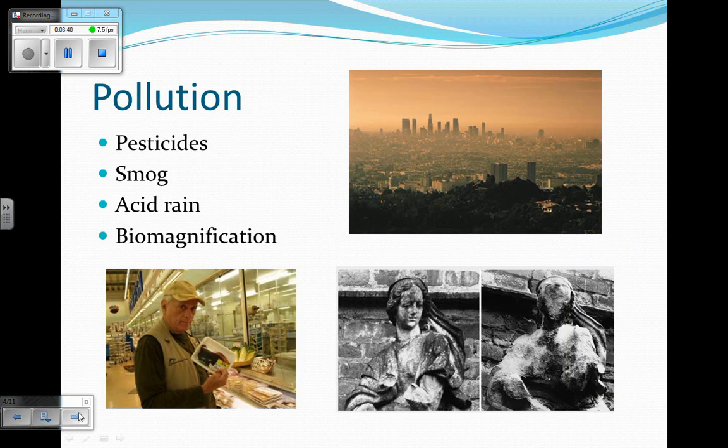Pollution is another huge problem. Pesticides are used in agriculture to get rid of weeds and bugs that eat crops. But these pesticides will run off — when there's rain, they run off into the rest of the ecosystem. Pesticides are poisons, and they are poisoning the rest of the ecosystem around the farms.